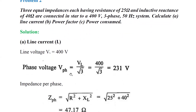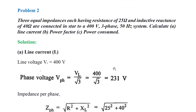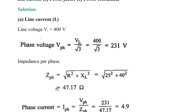Now we need to calculate the impedance because resistance and inductive reactance are given. Z_phase is equal to the square root of R squared plus XL squared. Resistance is 25 ohms and inductive reactance is 40 ohms. Taking the square root of 25 squared plus 40 squared, using a scientific calculator, we get Z_phase as 47.17 ohms.